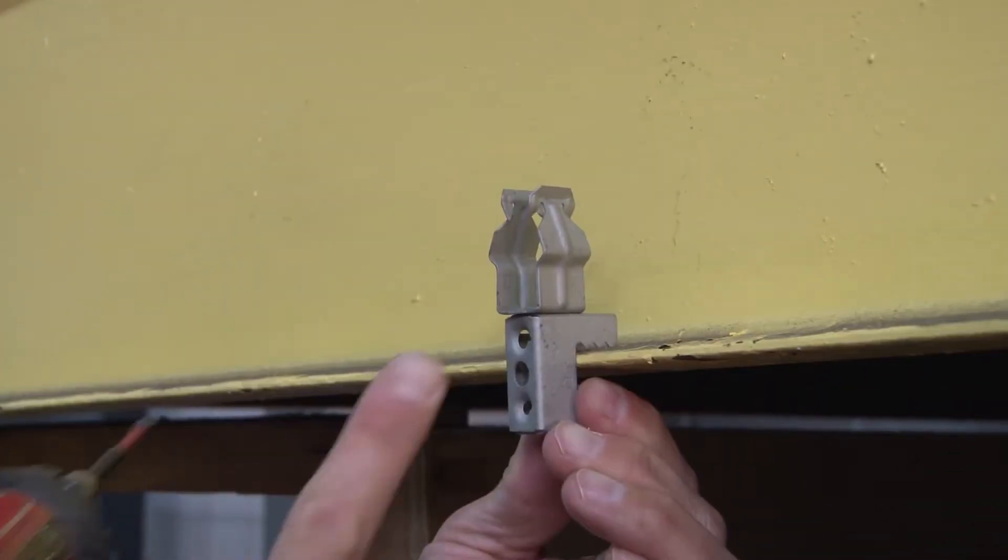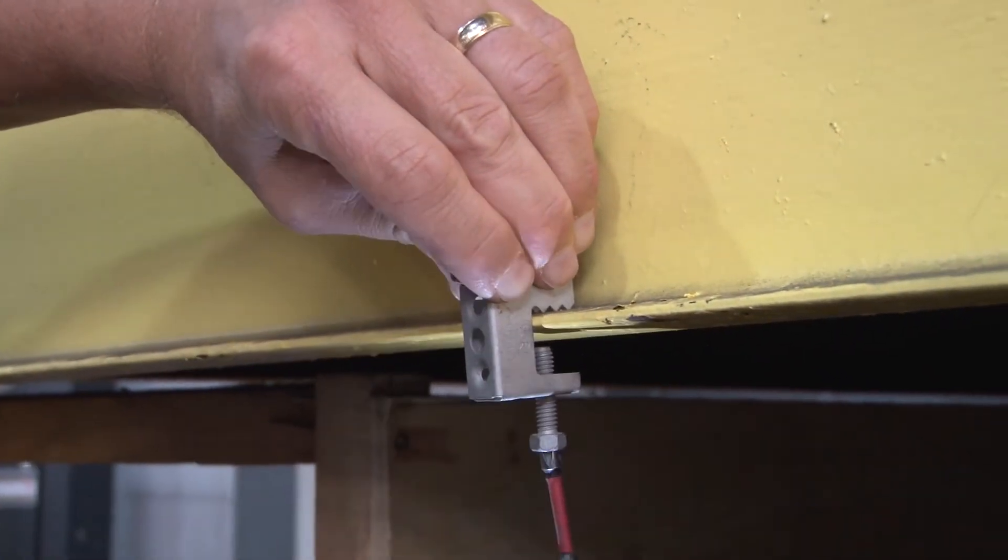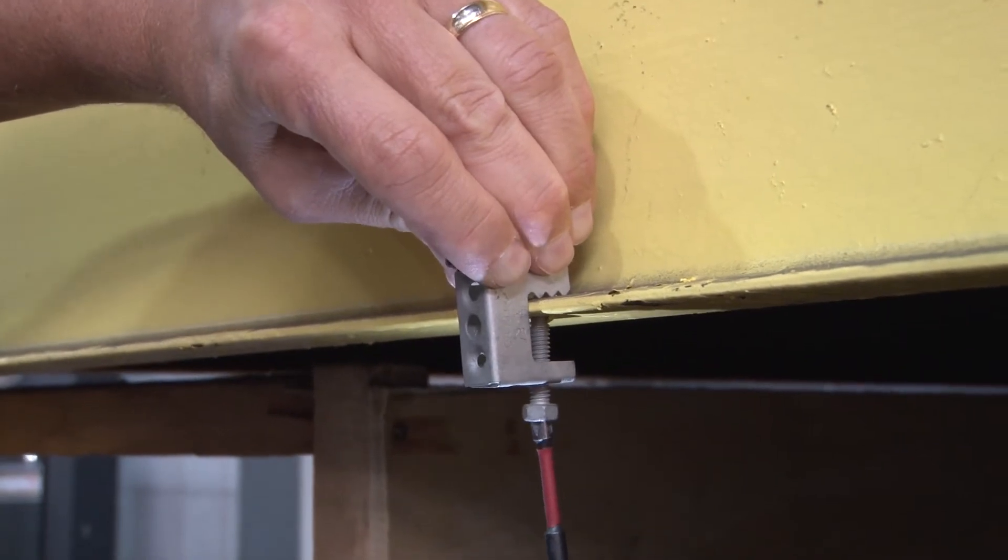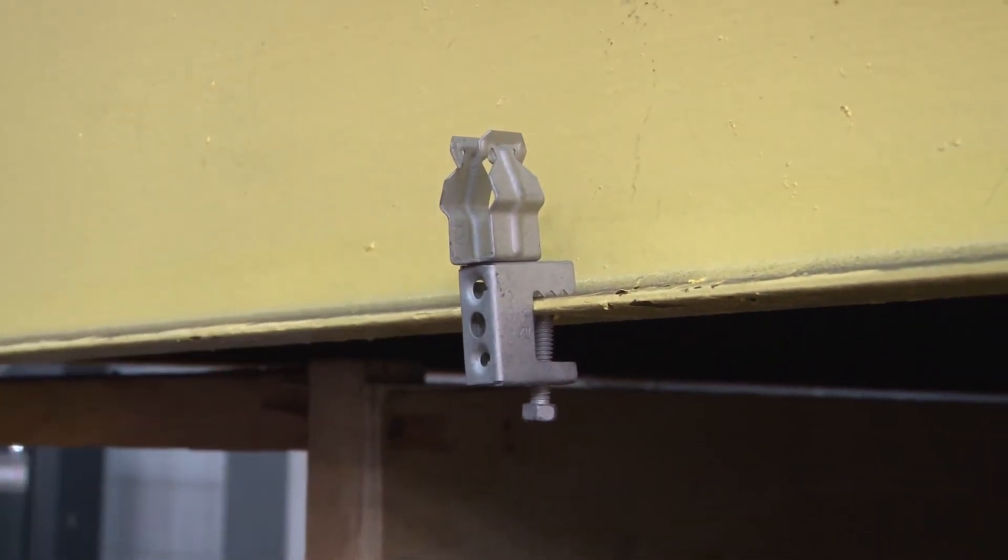Take your screw gun, simply hold the fastener in place, mount it tightly on the beam. As you can see, the spring steel fastener bites with the teeth.